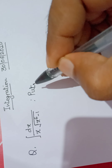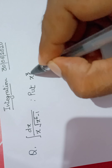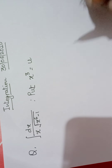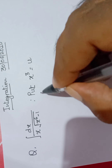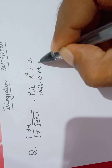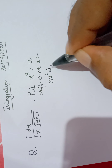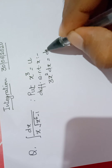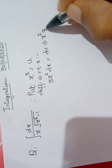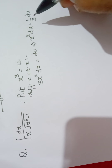Here it is a special substitution: let x to the power 3 equals u. Now differentiate it with respect to x. After differentiation, 3x² dx = du, and hence x² dx equals 1 by 3 du.